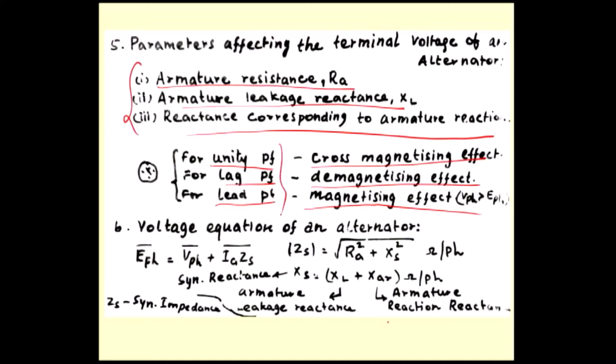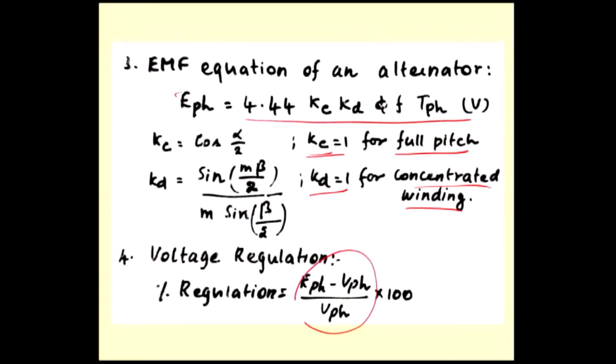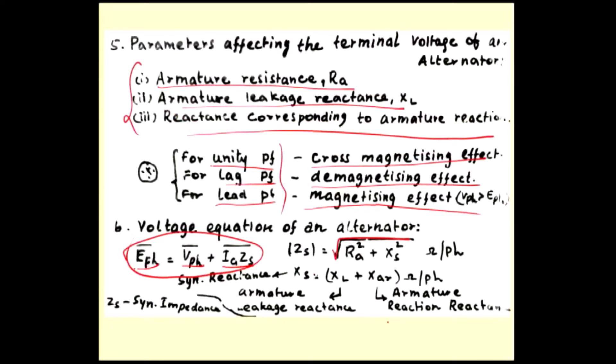Next, we developed the voltage equation of the alternator. E phase vector equals V phase plus IA times ZS. ZS is nothing but root of RA square plus XS square. XS is nothing but XL plus XAR. You have to be able to differentiate voltage equation and EMF equation. EMF equation is 4.44 Kc Kd phi f T phase. Voltage equation: E phase equals V phase plus IA times ZS.